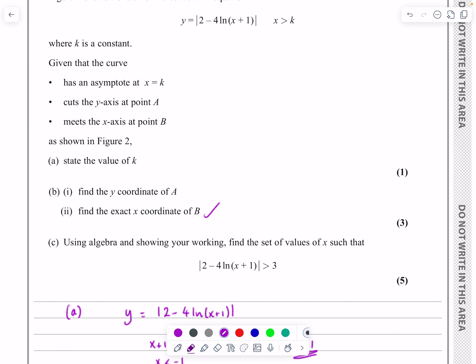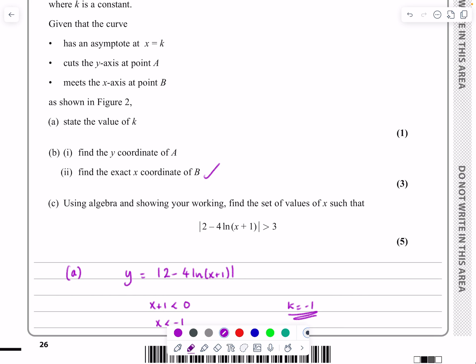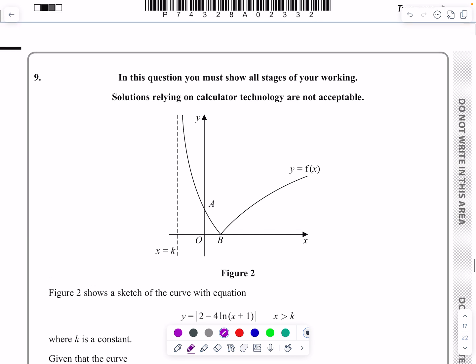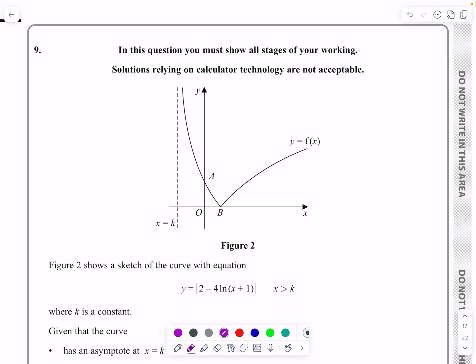Let's have a look at part c while we've got the screen there. So it says using algebra and showing your working, find the set of values for which the function is greater than 3. Let's just go back and have a look at our graph here. So we know that value is 2 there because we've just worked that out. So if I had the function equals 3, y equals 3 would be there. I'm going to get two possibilities here.